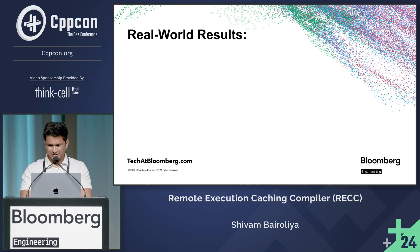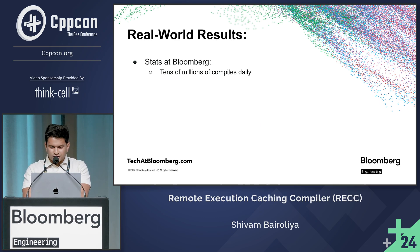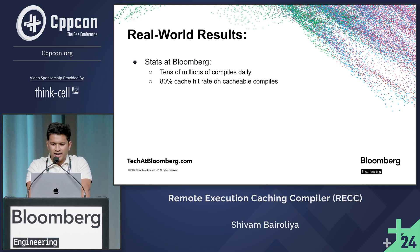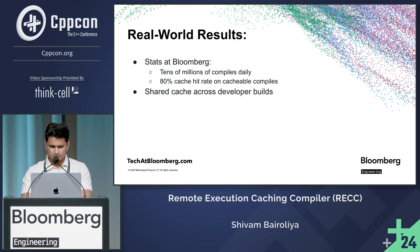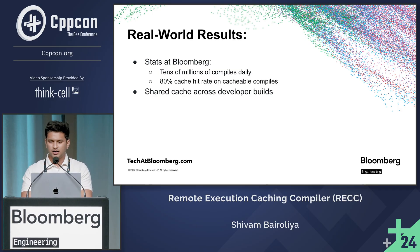All this is cool, but to illustrate REC's impact, let me share some numbers from our experience at Bloomberg. On a typical day, we see about tens of millions of compiles that go through REC, and we are achieving an impressive 80% cache hit rate on all cacheable compiles. About 80% of total invocations are cacheable according to REC. This translates to enormous time savings and resource efficiency across our development teams. Builds can be shared between multiple developers, significantly reducing duplicate work. If developer A has already built a project with a similar configuration, then developer B will get a cache hit from developer A's build, which is amazing for teams working on the same projects.